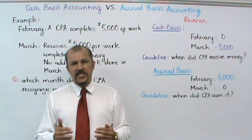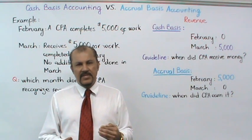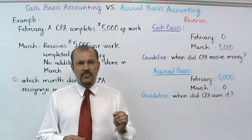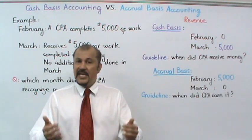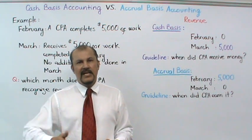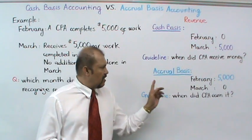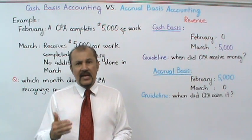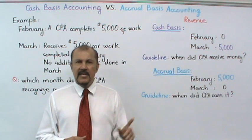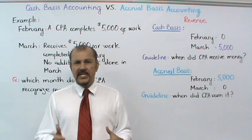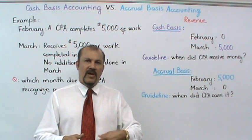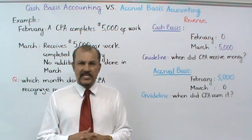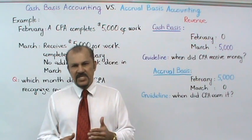In conclusion, with cash basis accounting, revenues are recognized in the month in which you receive the money, regardless of when you earned it. Under accrual basis accounting, revenues are recognized in the month in which you earned the money, regardless of when you receive the cash. That concludes our discussion on the revenue aspects of cash basis accounting versus accrual basis accounting.